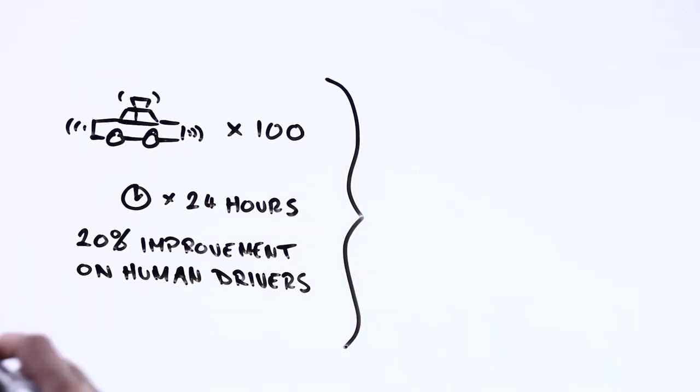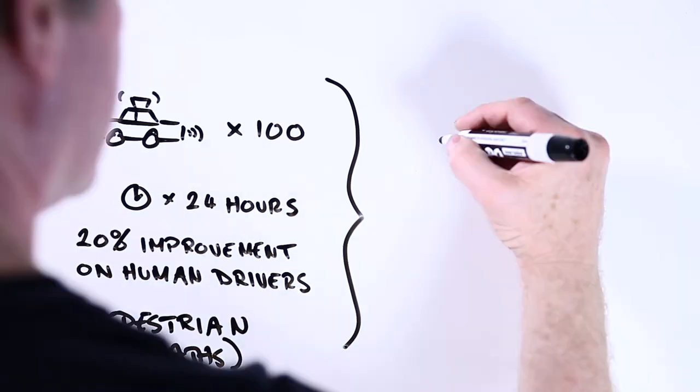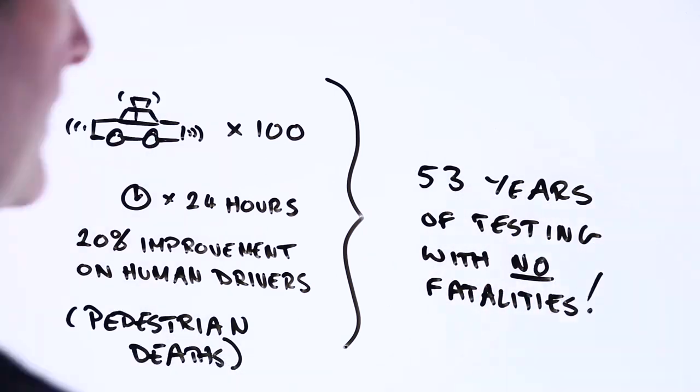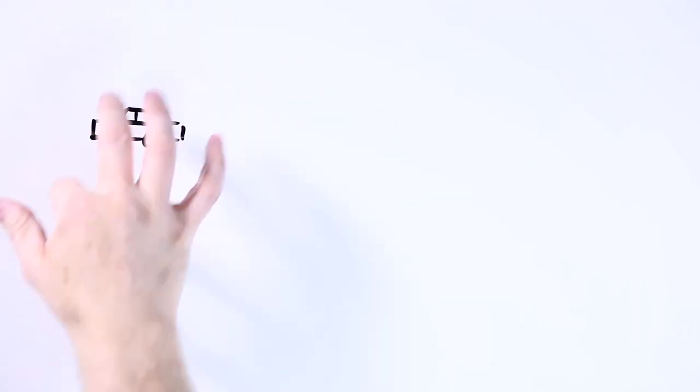Things look even worse if a tighter standard of a 20% improvement in pedestrian deaths for self-driving cars compared to human drivers is used. In this case, it would take closer to 53 years of death-free testing with 100 vehicles on the road. These sort of timelines are clearly unworkable for demonstrating safety.